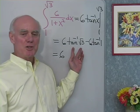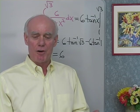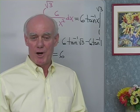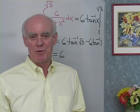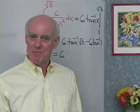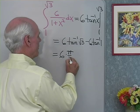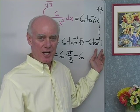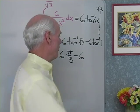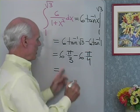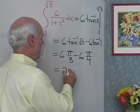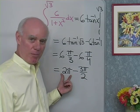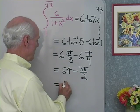The angle whose tangent is square root 3: thinking of tangent as sine over cosine, square root 3 over 2 divided by 1 half, so the angle is 60 degrees or pi over 3. The angle whose tangent is 1: sine equals cosine at 45 degrees or pi over 4. So we have 6 times pi over 3 minus 6 times pi over 4, which is 2 pi minus 3 pi over 2, giving 4 pi over 2 minus 3 pi over 2 equals pi over 2.